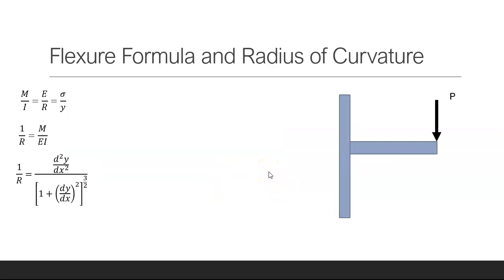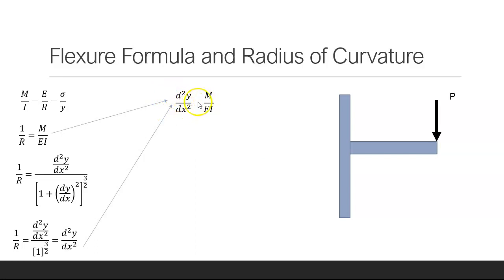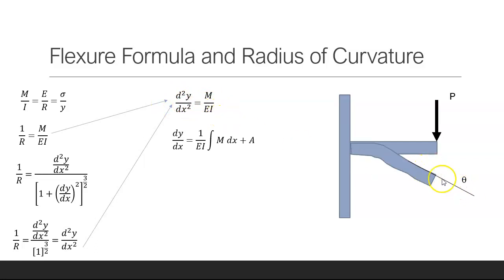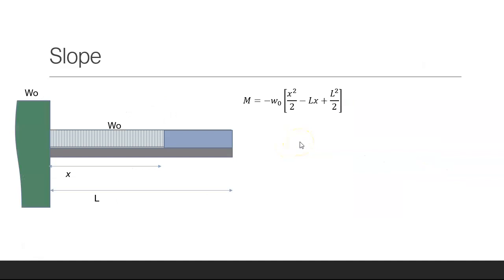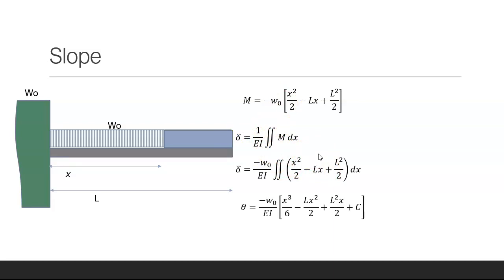Using the flexure formula, the radius of curvature is equal to M times EI. If we integrate that we get the tangent of the deflection, and if we integrate again we get the actual deflection. So we're going to double-integrate the bending moment.